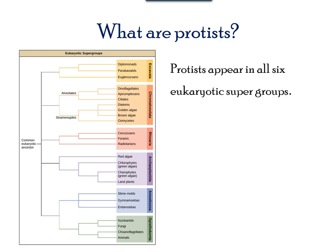With the understanding of DNA sequencing, it was shown that within the domain Eukaryote there are six supergroups, and all of these are believed to have evolved from a single common ancestor. Protists appear in all six groups, which is another example of convergent evolution.